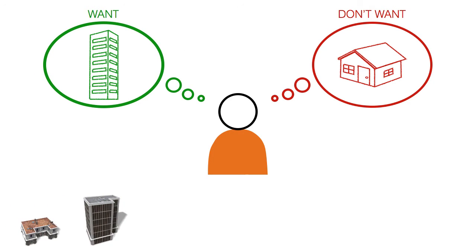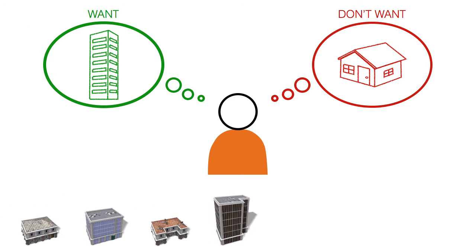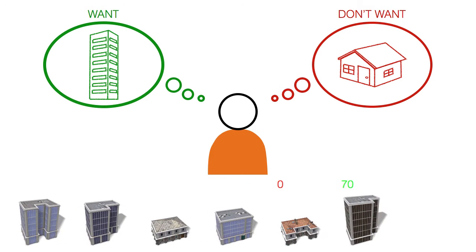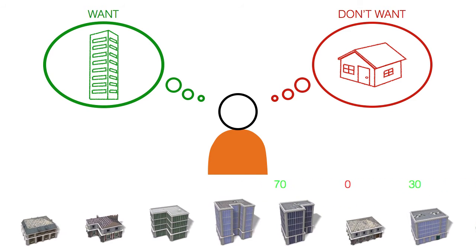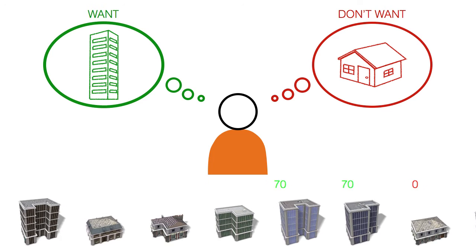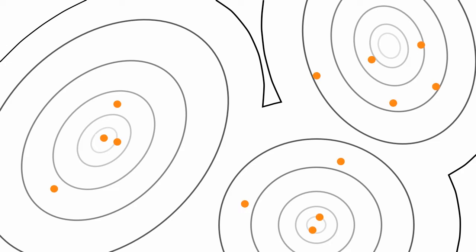We propose an interactive framework that allows users to obtain their desired set of models. Through user-assigned preference scores, our system learns a probability density function over the shape-space of the grammar. We sample the space according to the learned distribution, resulting in a selection of models that fit the user's preferences.